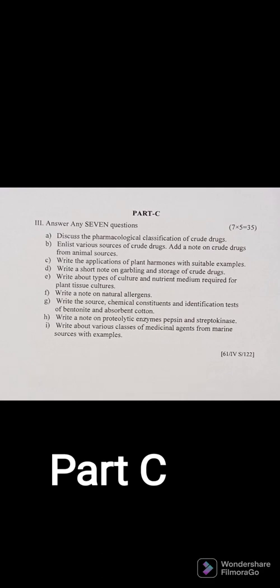Coming to Part C — answer any seven questions. Question C1: Discuss the pharmacological classification of crude drugs. You can write about drugs acting on the GIT — emetics, anti-emetics, appetite-increasing drugs; drugs acting on the CNS; drugs acting on the respiratory tract; drugs acting on the autonomic nervous system; anti-cancer drugs; and anthelmintic drugs — all with examples.